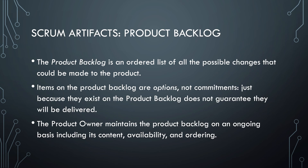Just like UP, Scrum also delivers artifacts. One of them is the product backlog — an ordered list, normally by importance, of all the possible changes that could be made to the software. These items are options, not commitments. The product backlog is a living document: depending on what happens during the sprint, items may be removed because they're no longer relevant, so putting something in the backlog doesn't guarantee it will be done. The product owner is responsible for maintaining the backlog and keeping it up to date.